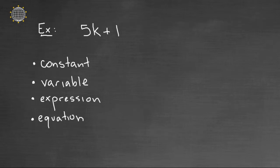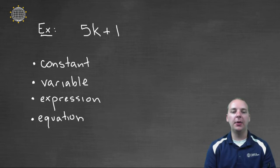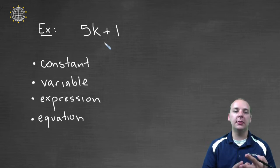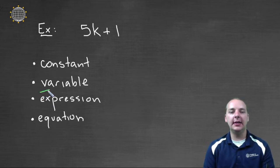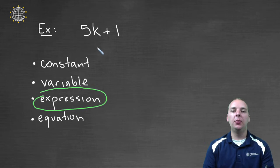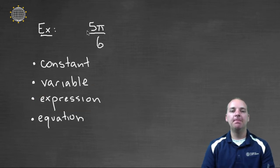Let's run through a few examples and test ourselves. We're going to try to decide which of these particular terms are. If we have 5k plus 1, I see some constants - a five and a one. I see a variable, that's a k, and I see some operations - five times k plus one. That makes me think that this is an expression, because it's a collection of constants and variables with different operations.